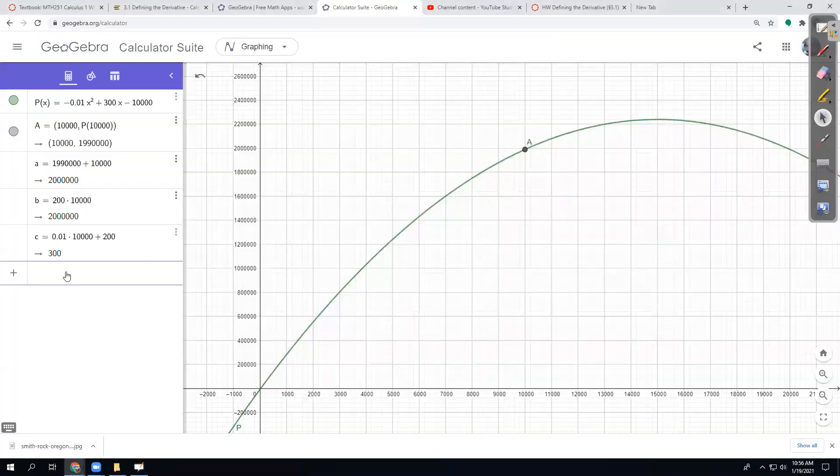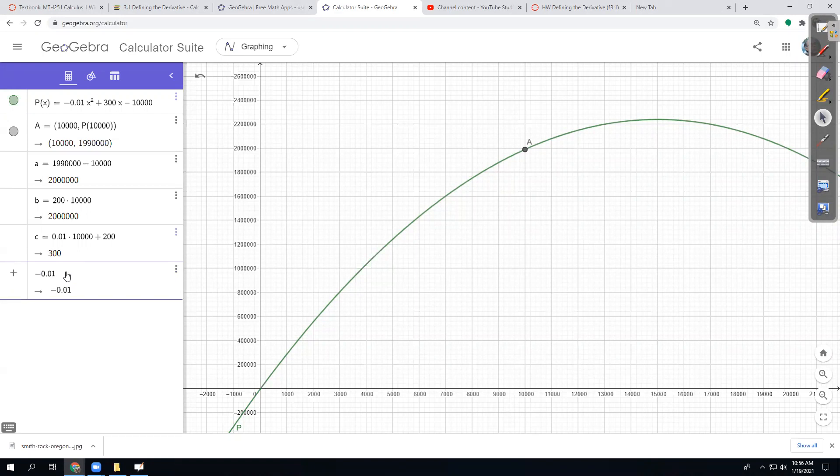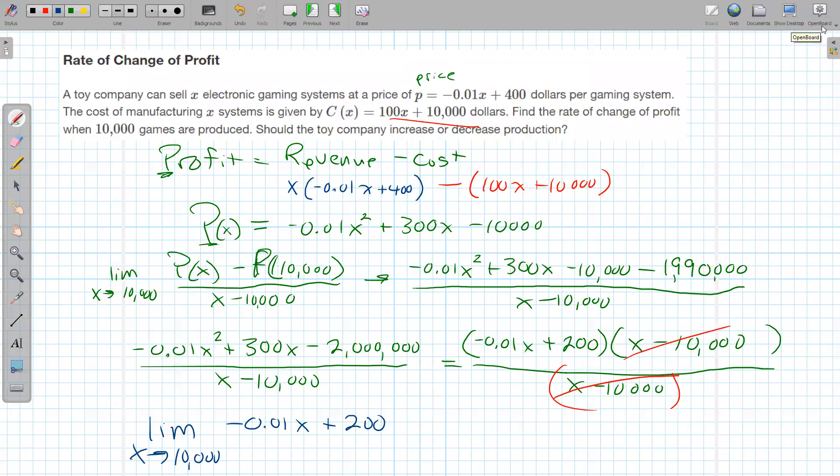So we're going to get the change in profit over time is equal to negative 0.01 times 100 times the x value, 10,000 plus 200. And so I get a rate of change of 100 if I type that right. And what does that number mean? So this evaluates to 100. And that is a change in profit. So that's going to be dollars per change in x. And x is the number of gaming systems. So they have a profit of $100 per gaming system that they sell.